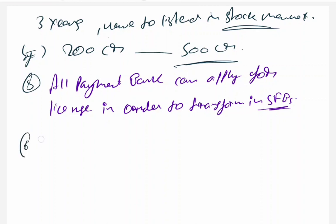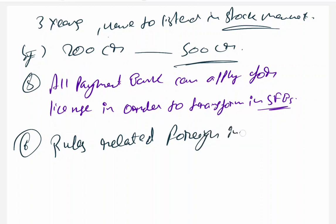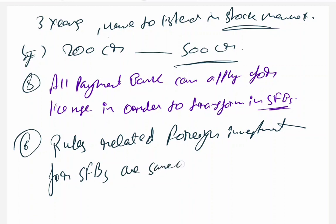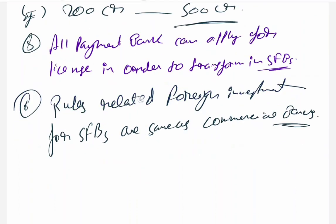The sixth point in the 2019 amendment: rules related to foreign investment for SFBs are the same as for commercial banks.